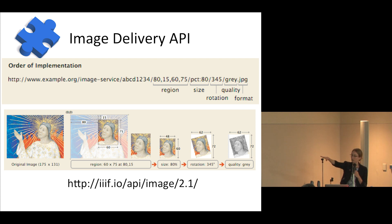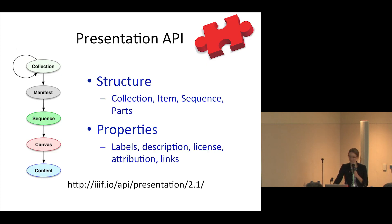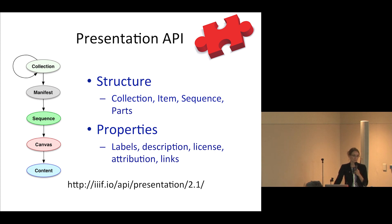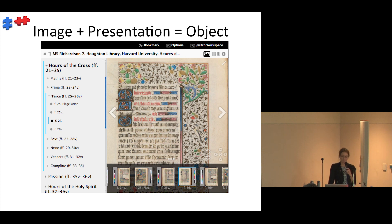A quick overview of the Presentation API: for each object represented with IIIF, it will have a manifest. For example, a book would have a sequence of pages. The Presentation API provides structure, labels, descriptions, and other contextual information about the objects and images you're showing. When you put the two APIs together, you get image pixels from the Image API combined with titles, table of contents, and metadata from the Presentation API.